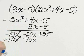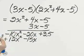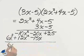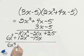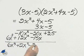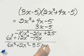Adding like terms: 6x cubed plus 2x squared minus 35x plus 25.